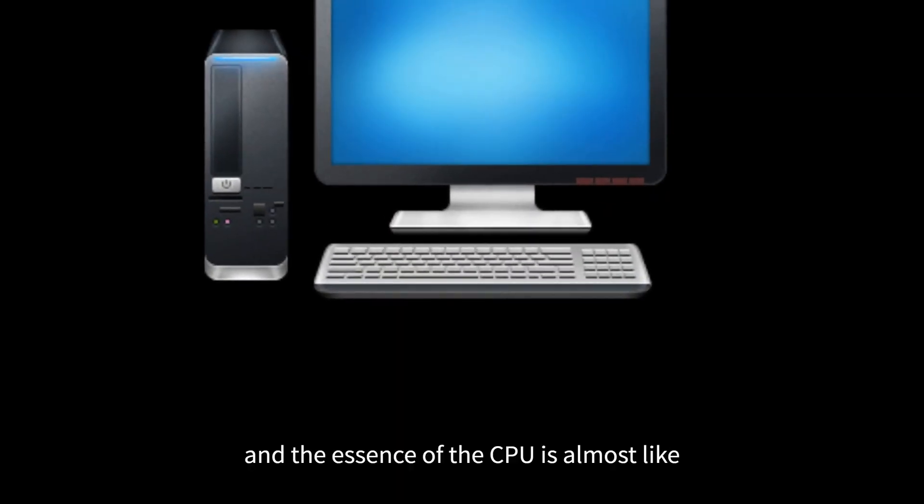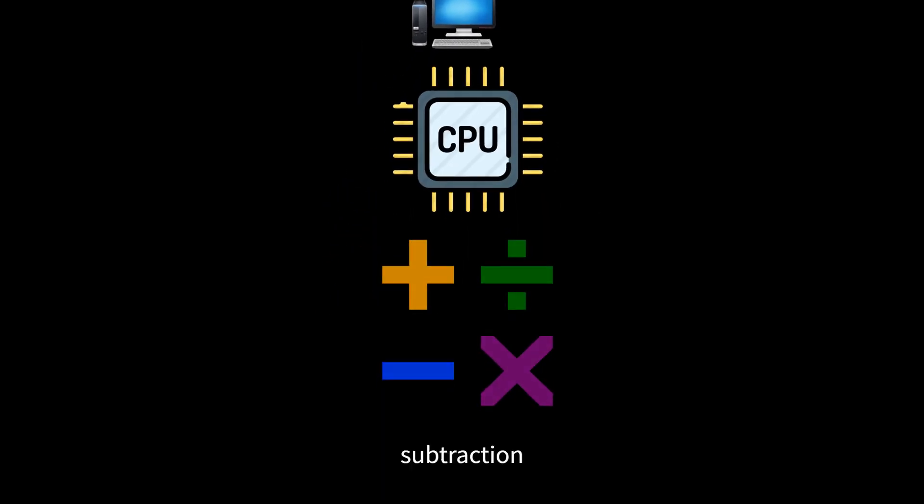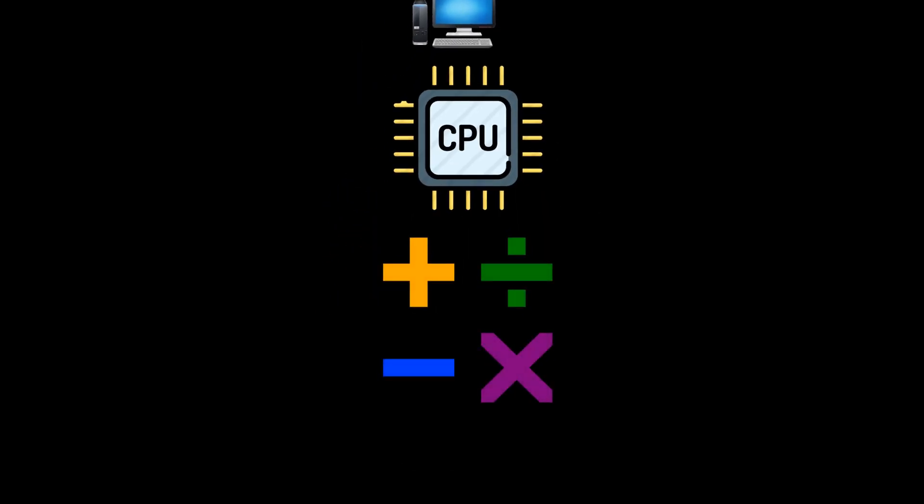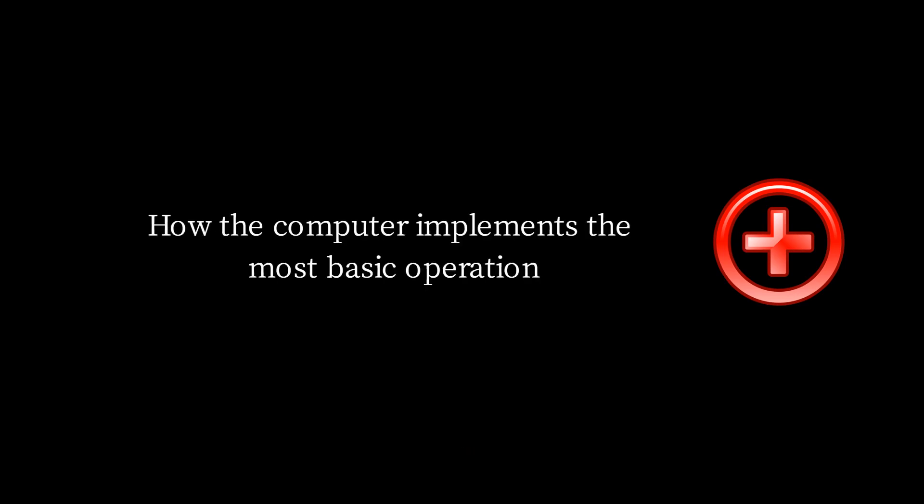We all know that the core of the computer is the CPU, and the essence of the CPU is almost like addition, subtraction, multiplication, and division, and these are realized by addition. So today we will talk about how the computer implements the most basic operation: addition.